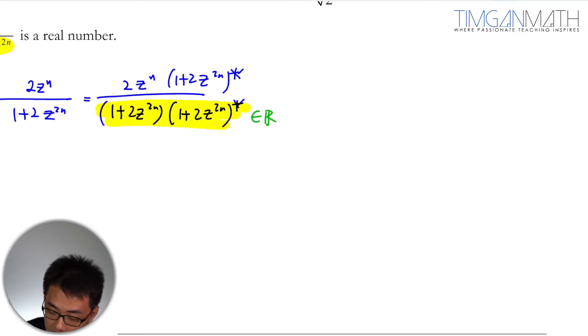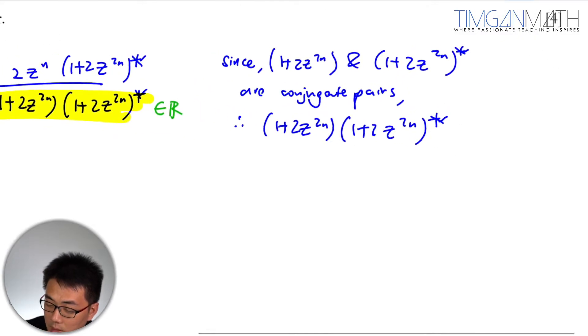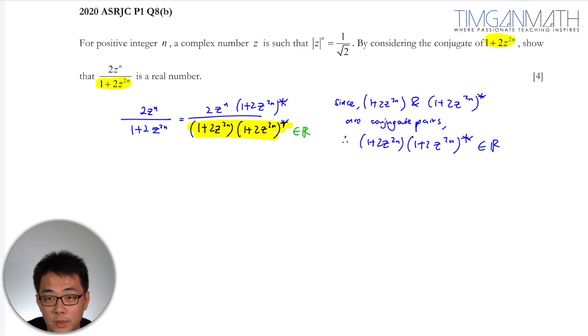Since (1 plus 2z^(2n)) conjugate are conjugate pairs, hence (1 plus 2z^(2n)) multiplied by (1 plus 2z^(2n)) conjugate is actually a real value. So I'm going to let this be k. Let this be k. Then we are good to go.